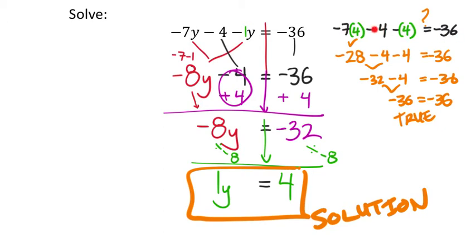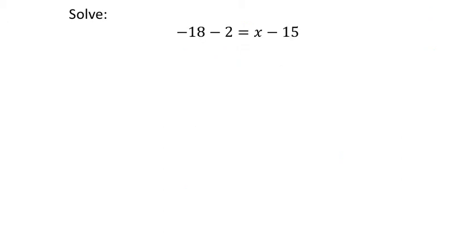There's a shortcut: you can just put this into the calculator — negative 7 times 4 minus 4 minus 4 — using parentheses if you'd like. The calculator evaluates it for you without doing all the work by hand. And as we see, negative 36 equals negative 36, so it's true. Also notice when working through Principles of Equality, values like negative 32 appear again in the checking process — the work is consistent throughout.